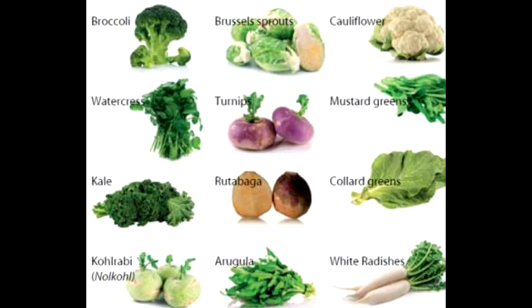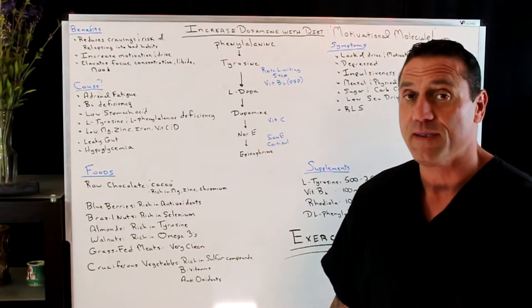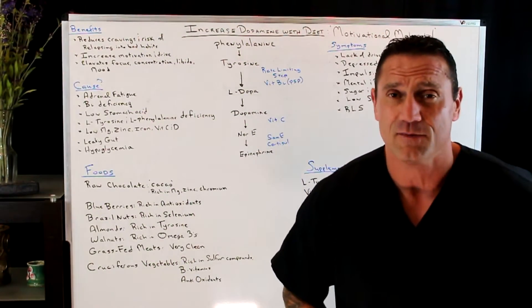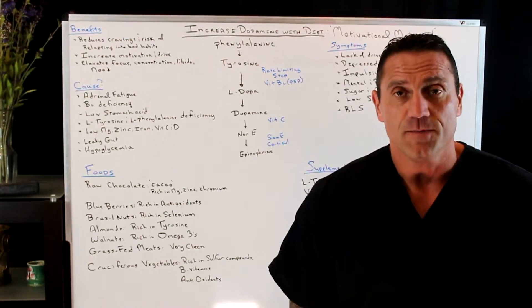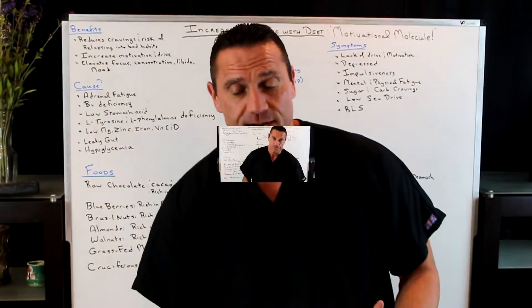Cruciferous vegetables, rich in sulfur compounds, B vitamins and antioxidants. Phenomenal for the gut health. You need this stuff to produce dopamine. And also when you clean up your diet, you're going to feel better anyways.